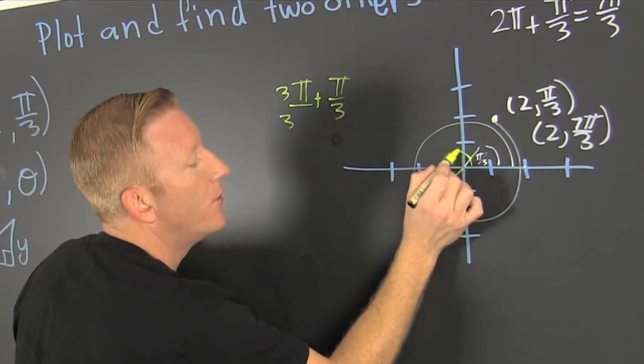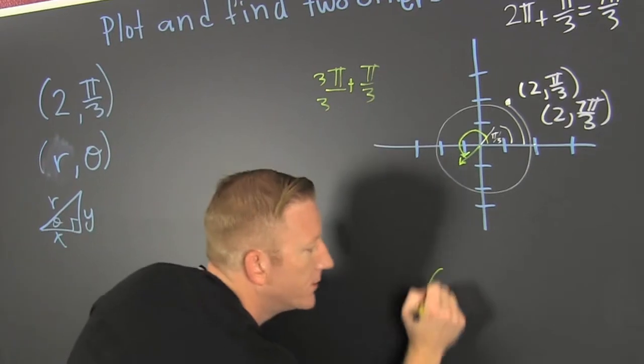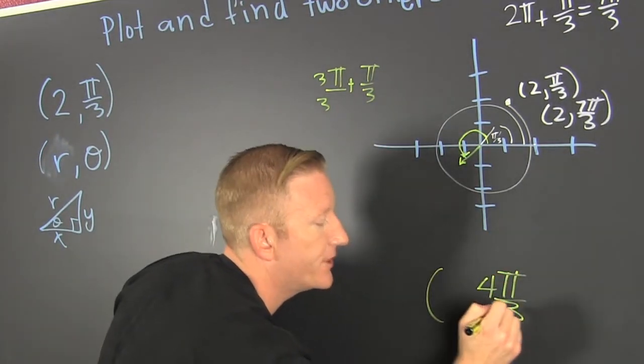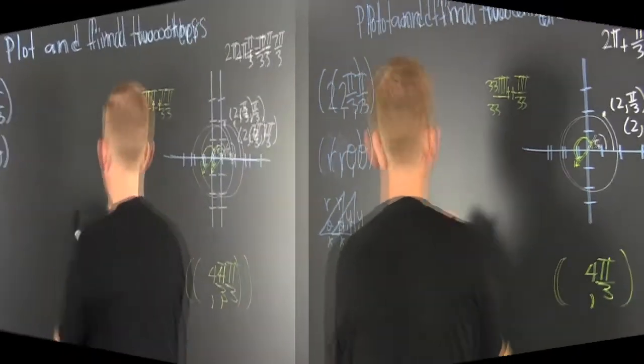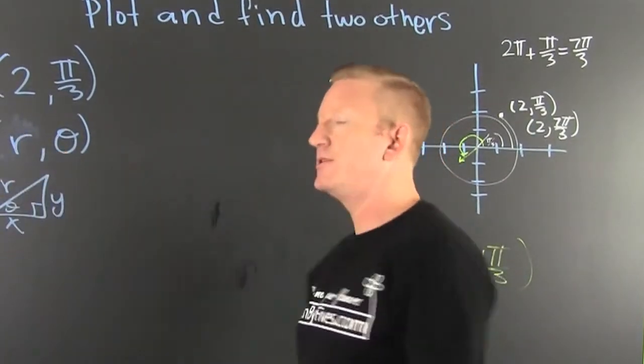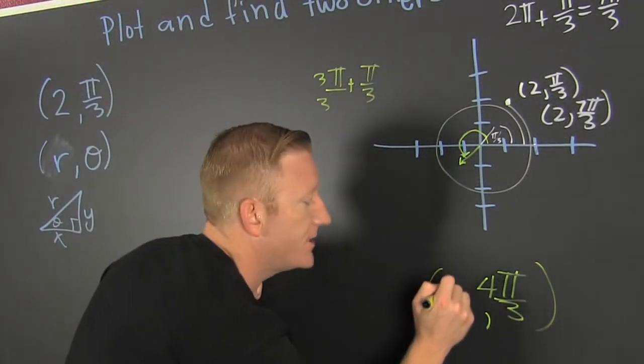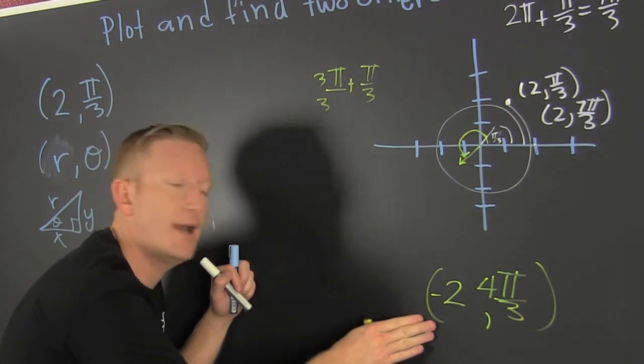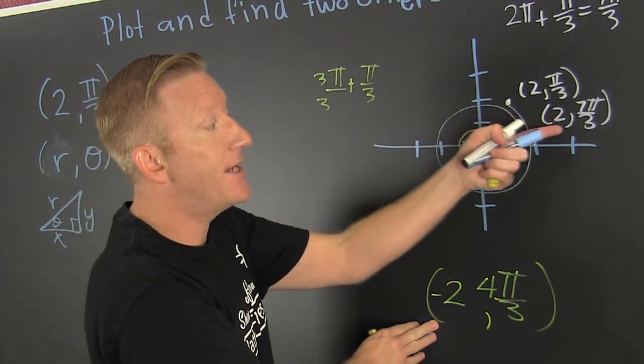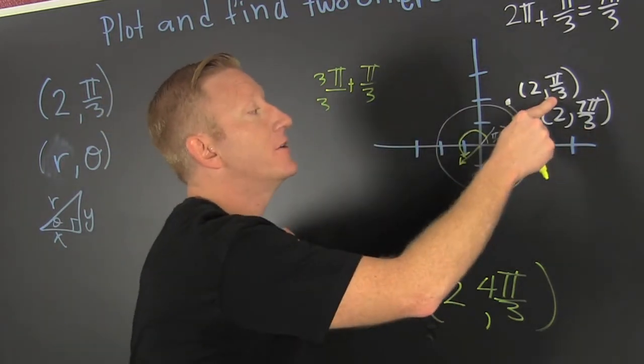So I'm looking at 4 pi over 3. I'm gonna go 4 pi over 3 and boom, here we are. Explicitly now, I'm gonna go backwards - not shoot in the forward direction but in the negative direction. That's a 2, so minus 2 and 4 pi over 3 is the same as (2, 7 pi over 3), which is the same as (2, pi over 3).